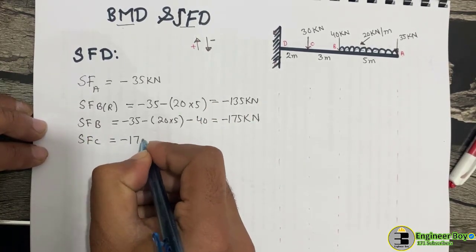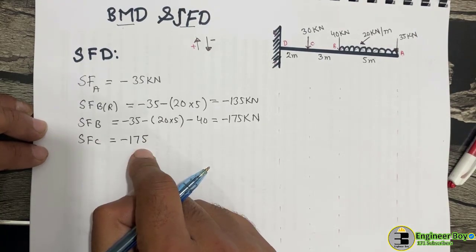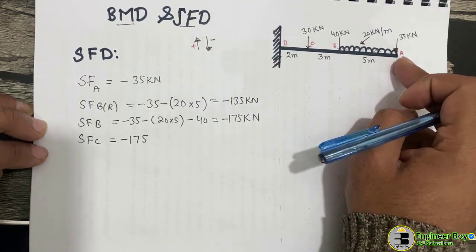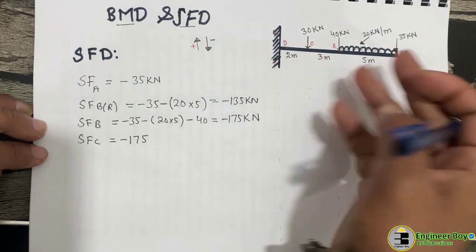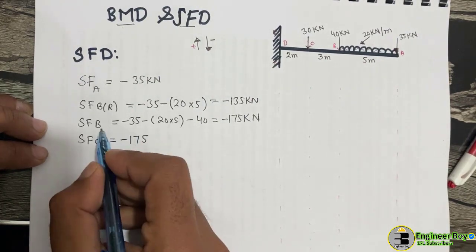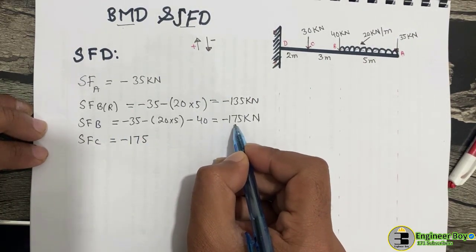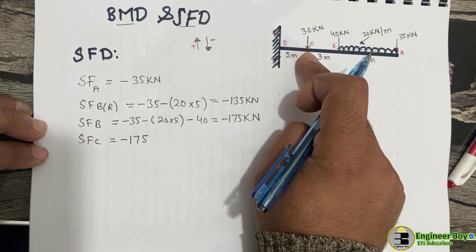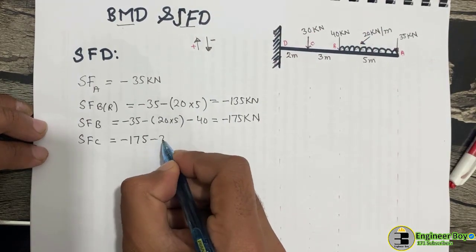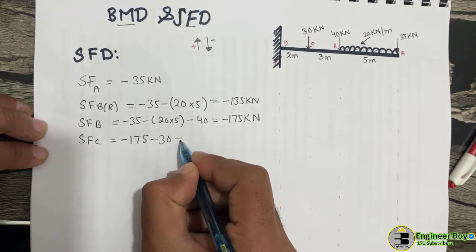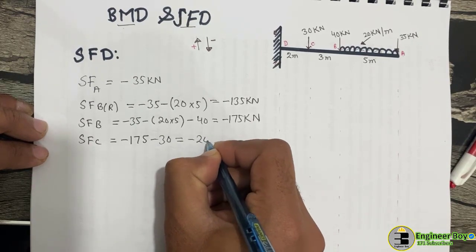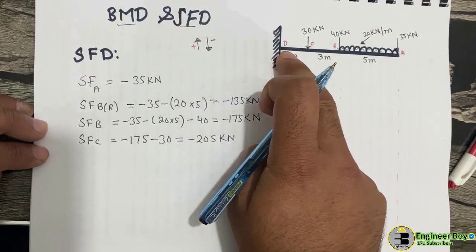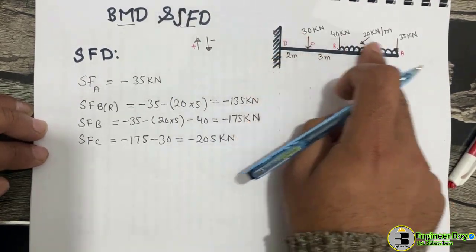For shear force at point C, we take the value already calculated up to point B which is minus 175 kilonewtons, so we start from that. At point C we have another load of minus 30 kilonewtons, giving a shear force at C of minus 205 kilonewtons.